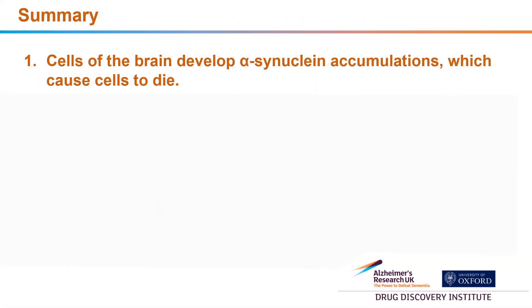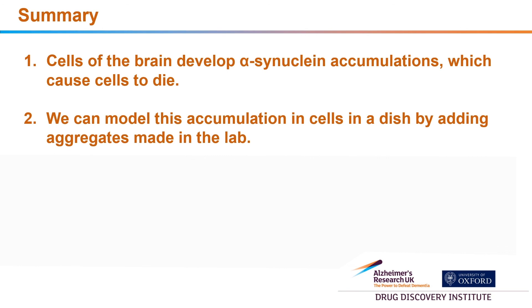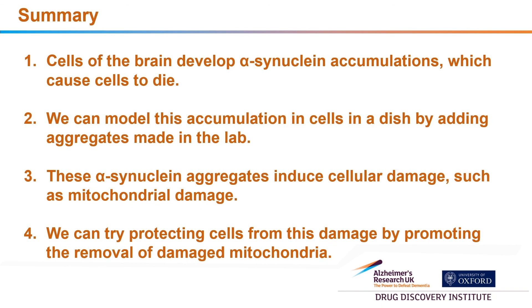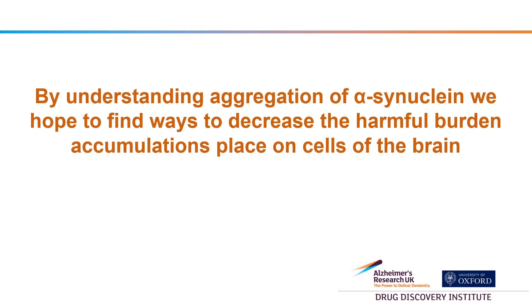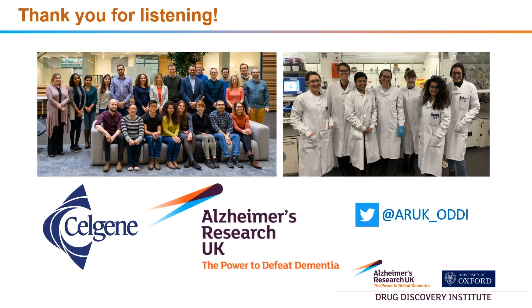In summary, the take-home messages from my talk are: the cells of the brain develop alpha-synuclein accumulations which cause the cells to die; we can model this accumulation in cells in a dish by adding aggregates made in the lab; these alpha-synuclein accumulations induce cellular damage such as mitochondrial damage; and we can try to protect the cells from this damage by promoting the removal of damaged mitochondria using specialized drugs. By understanding the aggregation of alpha-synuclein, we hope to find ways to decrease the harmful burden these accumulations place on the cells of the brain. Thank you for your time and for listening.